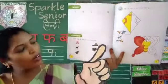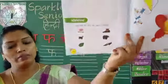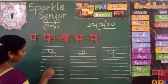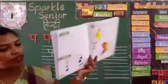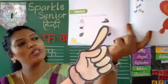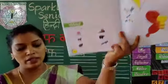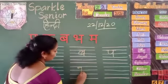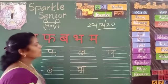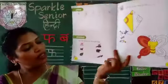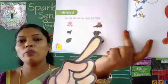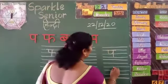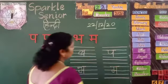Next, right side, Billy. Billy — so you have to write Bha. Next, this one is Bhalu. Bhalu means bear. So Bhalu — Bha, you have to write. Last one is Mor. Mor means peacock. This is Ma. Mor.